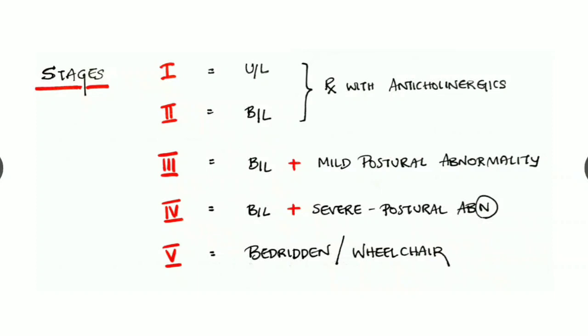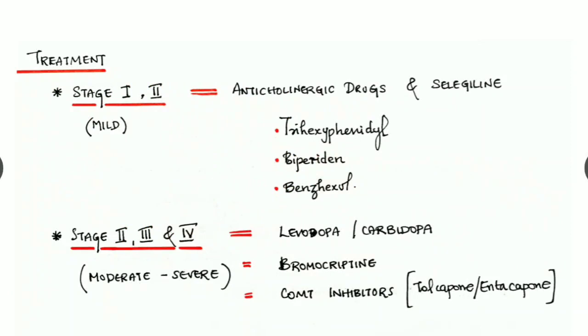We have to stage the Parkinsonism disease. Stage one, where only the disease is affecting unilaterally. Stage two has bilateral involvement. In these stage one and two, we can treat the patient with simple anticholinergics. In stage three, the disease is affected bilaterally with mild postural abnormality. In stage four, there is bilateral involvement with severe postural abnormalities. In stage five, the patient is bedridden or in wheelchair.